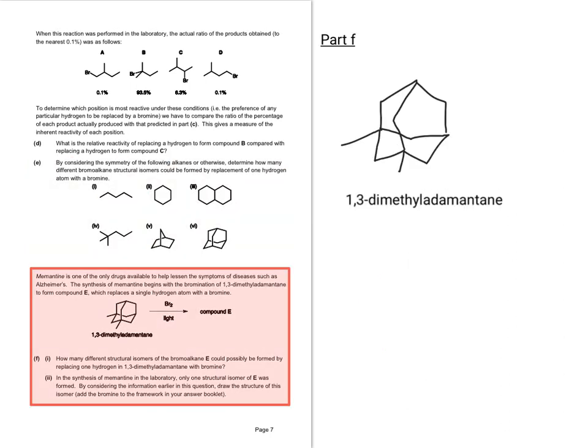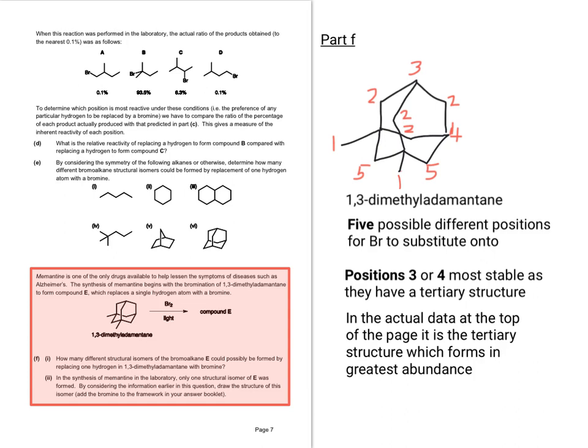If we take this compound 1,3-dimethyladamantane, what we want you to think about is how many different ways could one bromine be substituted for one hydrogen. Using the same logic there are five. So here positions three and four are the tertiary structures. So what you would do is redraw the structure with the bromine in one of those two places.